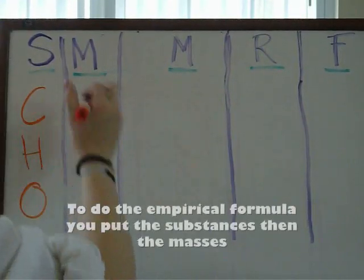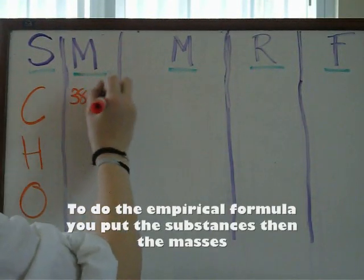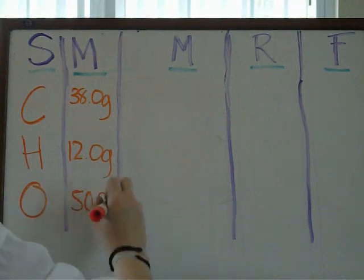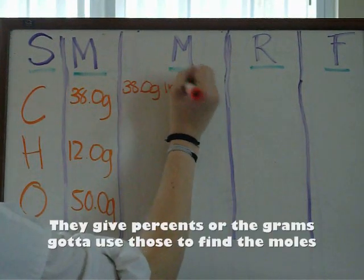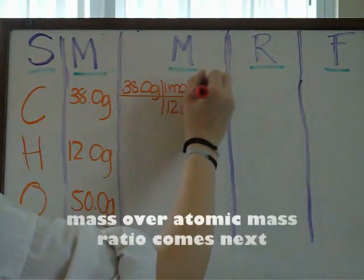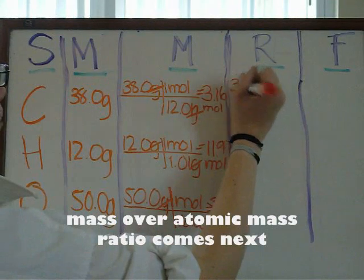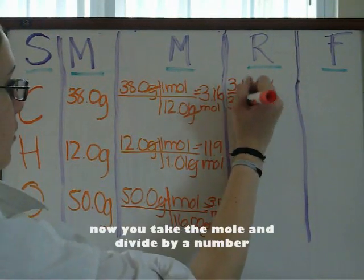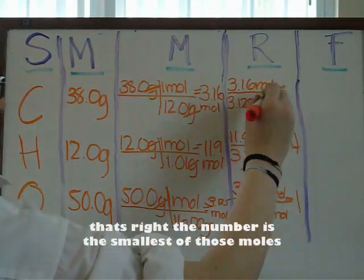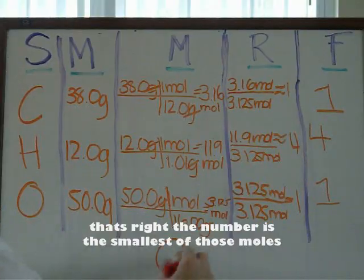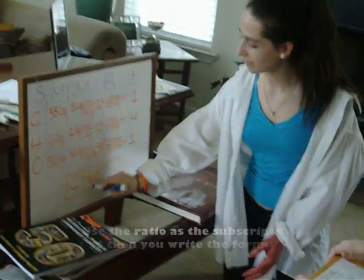To do empirical formula, you put the substance and the masses. They give percent to the grams — gotta use those to find the moles. Mass over moles, the mole ratio — you take the mole and divide by the smallest number. The number is the smallest of those moles. Use the ratio as the subscript and then you write the formula. That's the empirical formula.